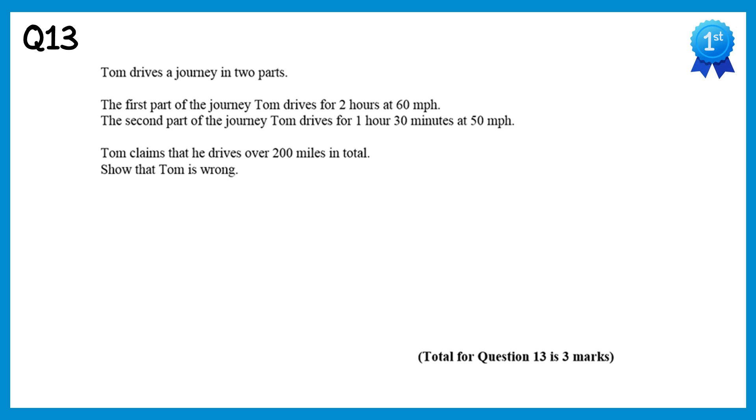For this question we need to use the formula speed equals distance divided by time, or rather the rearrangement distance equals speed times time. The journey is in two parts. For the first part Tom travels for 2 hours at 60 miles per hour, so the distance here will be equal to the speed times the time. The speed is 60, and the time is 2. So the distance is 120 miles.